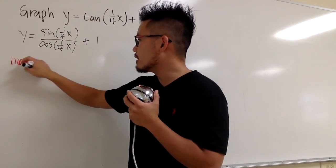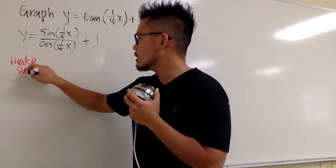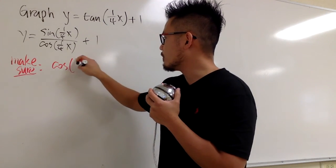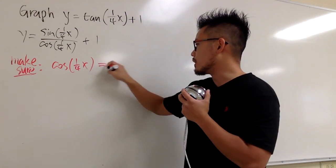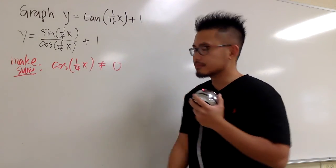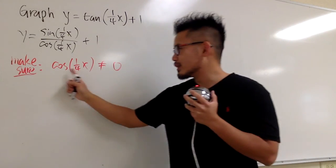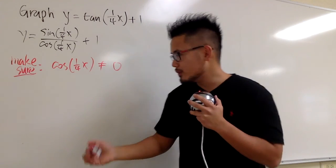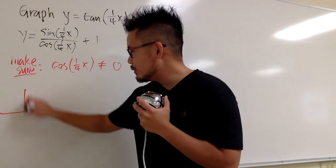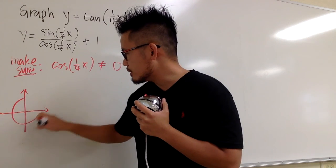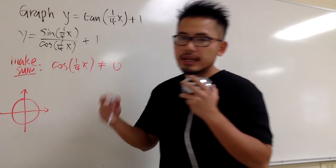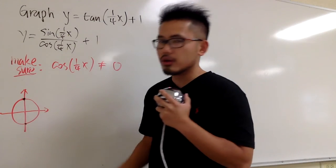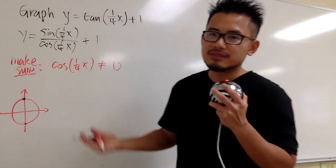We don't want cosine(1/4 x) to equal zero. Cosine of what is zero? Let's look at the unit circle. Cosine is the x-value, so the points where the x-value is zero are at the top and bottom of the circle.